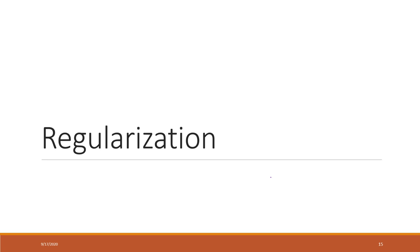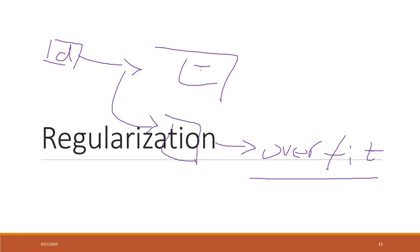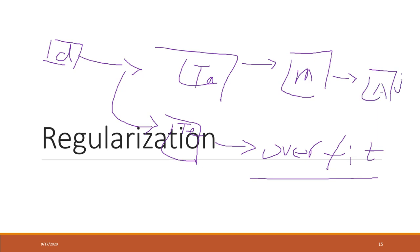The last concept we are talking about this week is called regularization. Regularization is an approach to handle overfitting. If you remember from last week, when we have data we split it into training and also testing. We use the training data to build the model, and because the model is trained on training data, the accuracy on training will normally be pretty good. We then bring the testing data to the model.